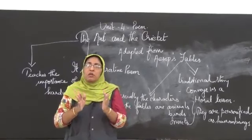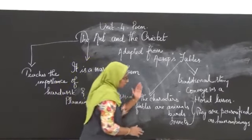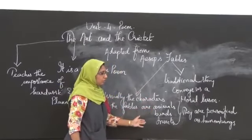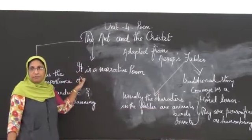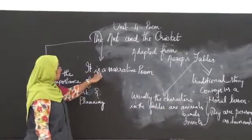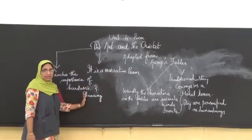Throughout this poem, the poet has used only personification as a poetic device, because here animals, birds, and insects are personified as human beings. And it is a narrative poem. It teaches the importance of hard work and planning.